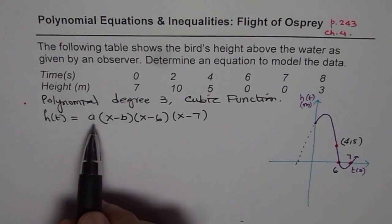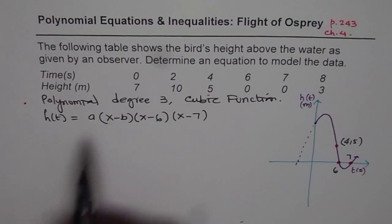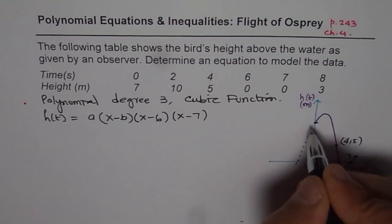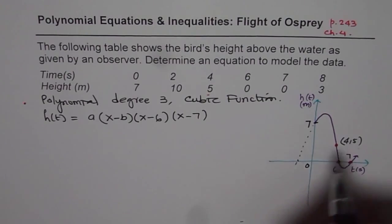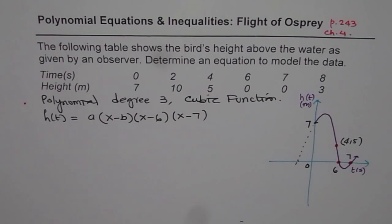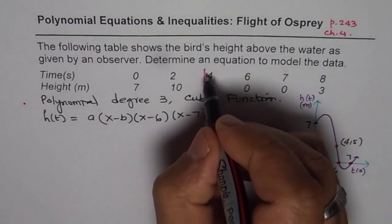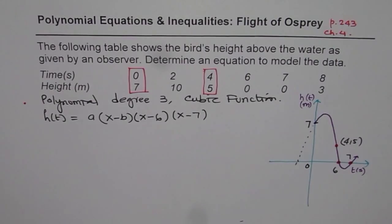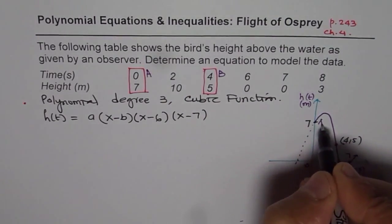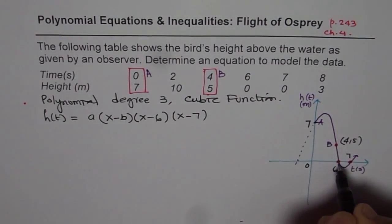Now to find the two variables a and b, we will use the y intercept, which at x equals to 0 we have 7, and this point 4 and 5. Let me highlight the points which we are going to use. This one and this one. Let me call these points as a and b. So this is my point a and this is my point b. I have already used these two intercepts.